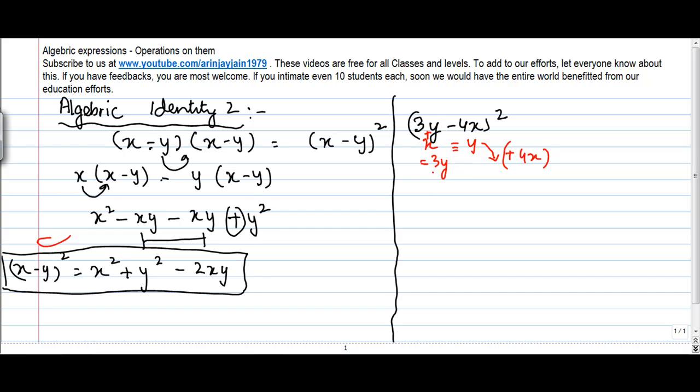Applying the identity we get x squared plus y squared minus 2xy. My x is equal to 3y squared plus y is equal to 4x squared minus 2 into 3y into 4x.